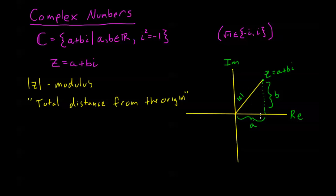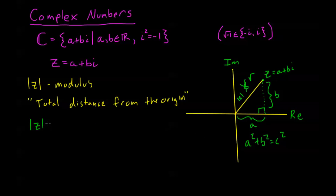Now from basic trigonometry, I know that if I have this right triangle — and that's exactly what I have here — I have this right angle. If this is my hypotenuse c, I know that a squared plus b squared equals c squared. We usually denote this as r, and we actually call r the modulus of z. Taking the square root of both sides, we get that the modulus of z is equal to the square root of a squared plus b squared.